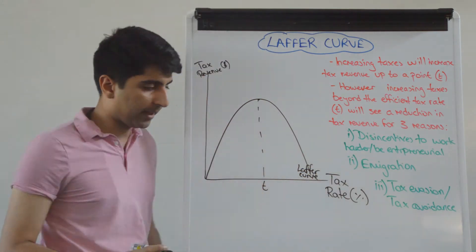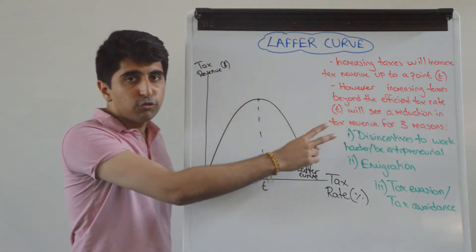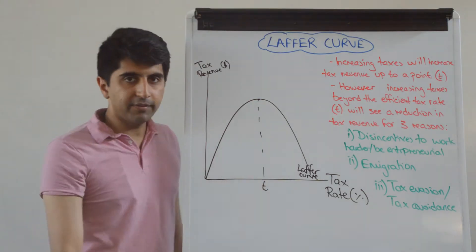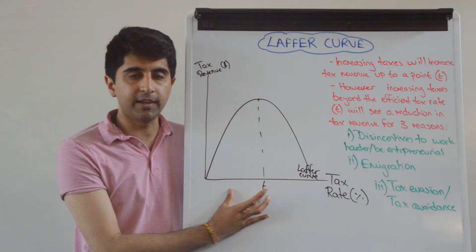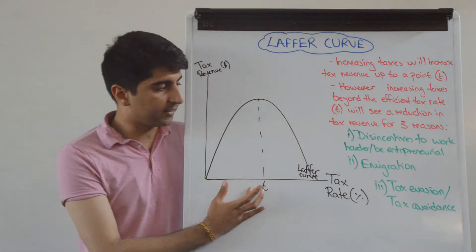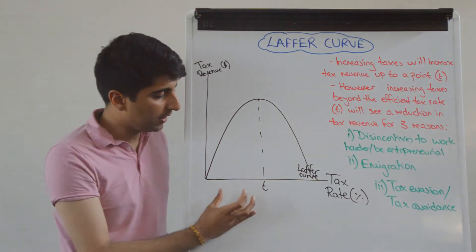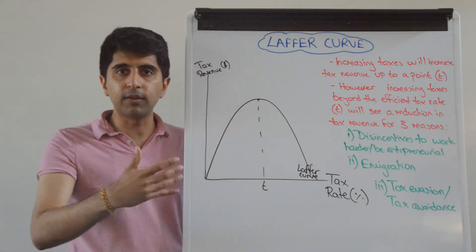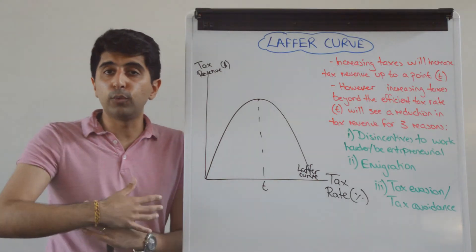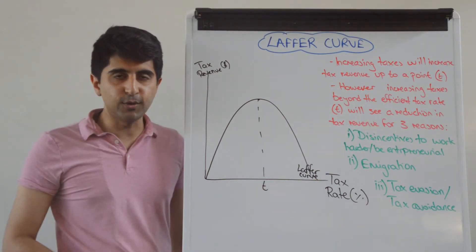Right there. So the two things in red explain what this Laffer curve shows. And Laffer said that before the efficient tax rate of T, if the government increases taxes, let's keep it simple and say this is income tax right now, if the government increases income tax, then yes, the government is going to see an increase in tax revenue collected. They can do whatever they want with that money. Fantastic news.